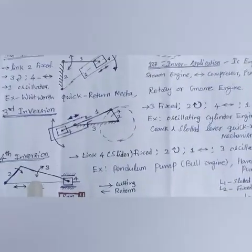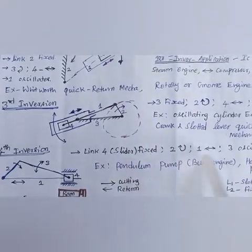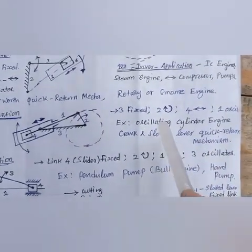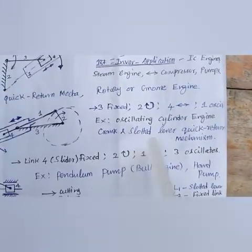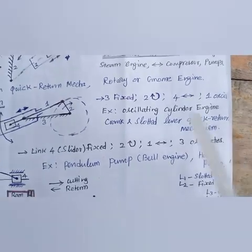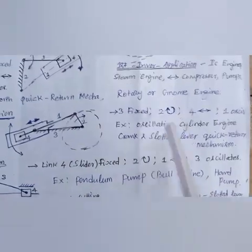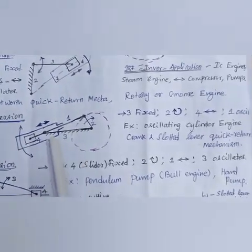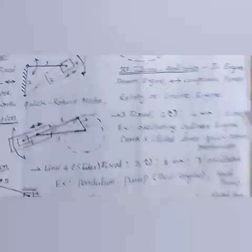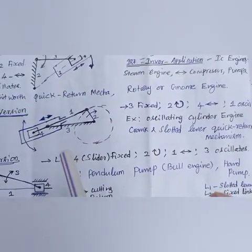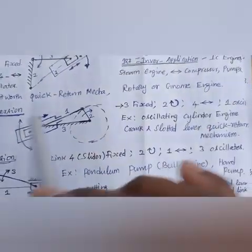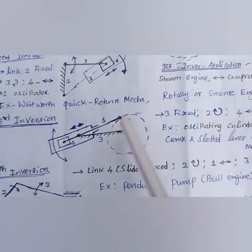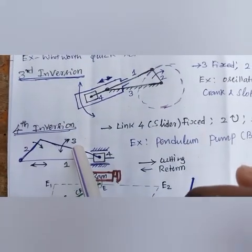Third inversion: practical applications are the crank and slotted lever quick return mechanism and the oscillating cylinder engine. Here, link three is fixed, link two rotates, link four oscillates, and link one also oscillates. This is the oscillating cylinder engine — the third inversion. The crank and slotted lever mechanism is a very important topic.